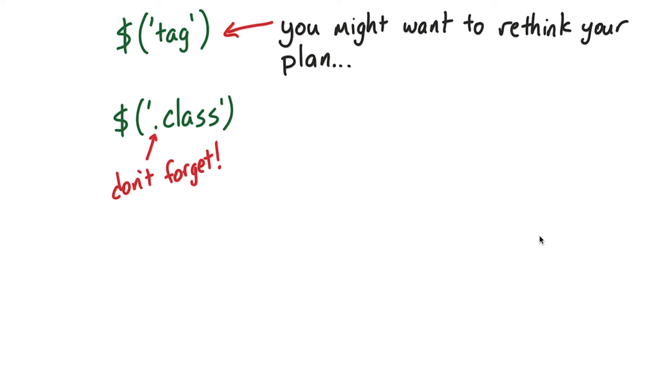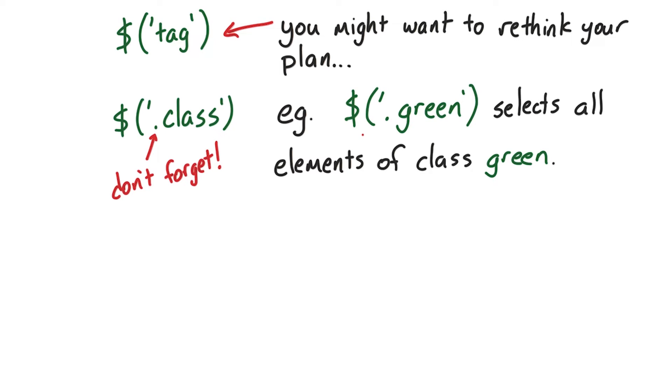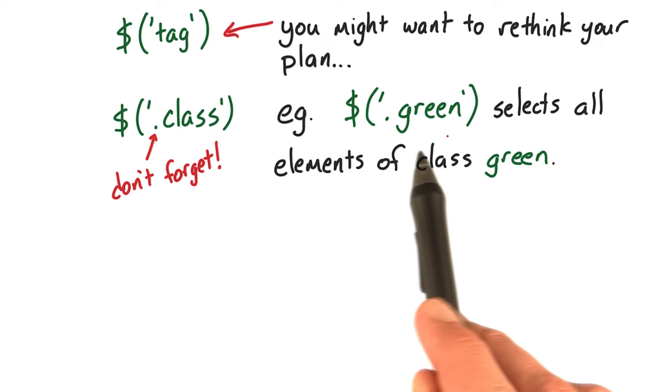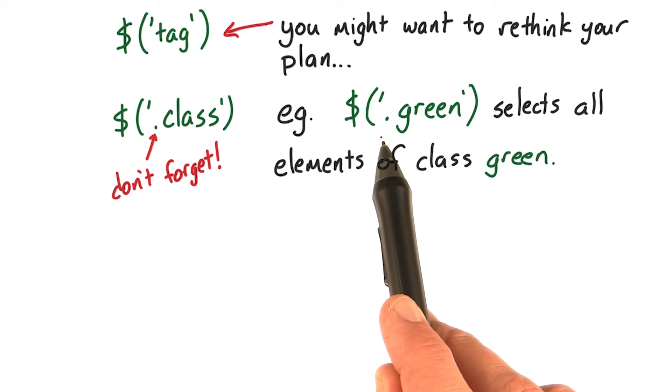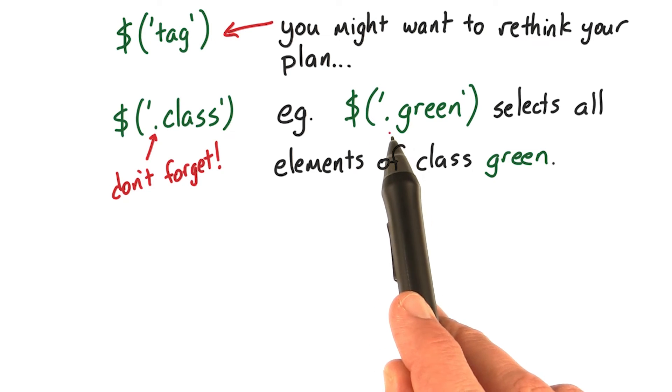To select all elements of a certain class name, simply pass the class name with a dot in front as a string to the jQuery object. For instance, if you want to select all elements of class green, you could call the jQuery object and pass it a string of a dot followed by green.